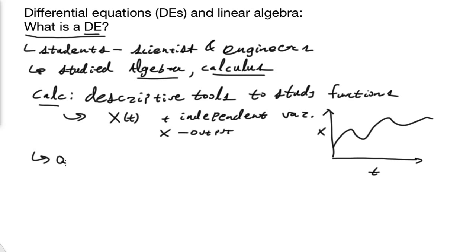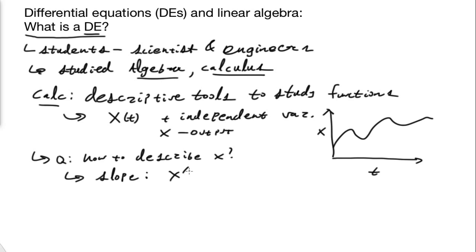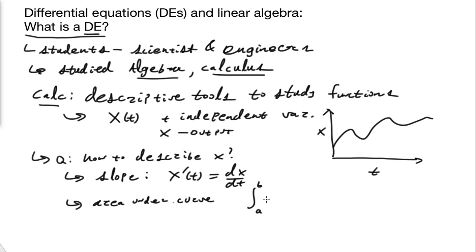The questions you might ask are things like how to describe x — how fast it changes, or its slope. Of course, we have a tool to describe the slope of a function: we can call it x prime of t, or dx/dt. That's one of our core tools in calculus. We can also talk about the area under the curve — the integral from a to b of x of t dt. So calculus gives us tools to describe these quantities.